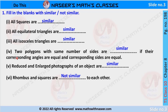So we can say that isosceles triangles are similar. Fourth, two polygons with the same number of sides are similar if their corresponding angles are equal and their corresponding sides are equal. In any two polygons with the same number of sides, if their corresponding angles are equal and their corresponding sides are equal, we fill this blank with 'similar'.